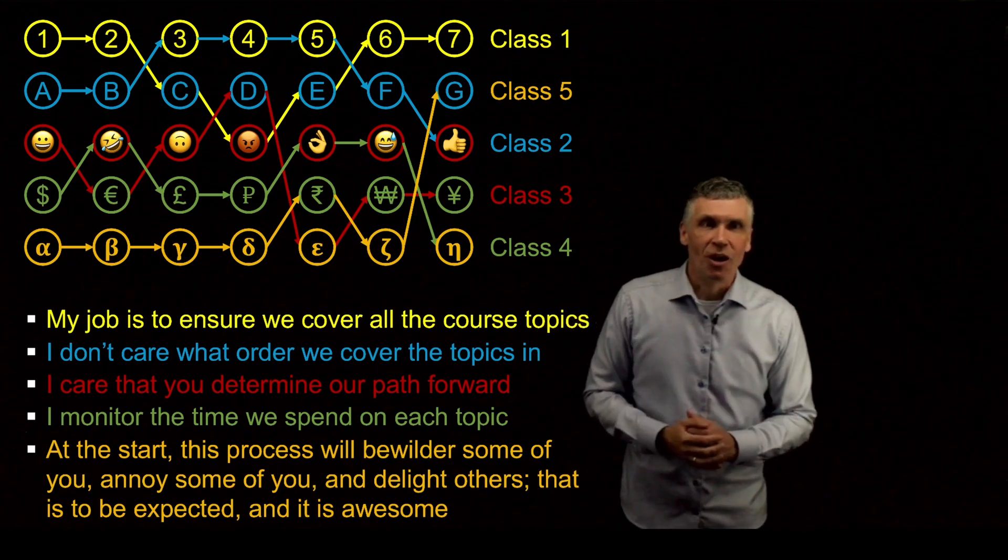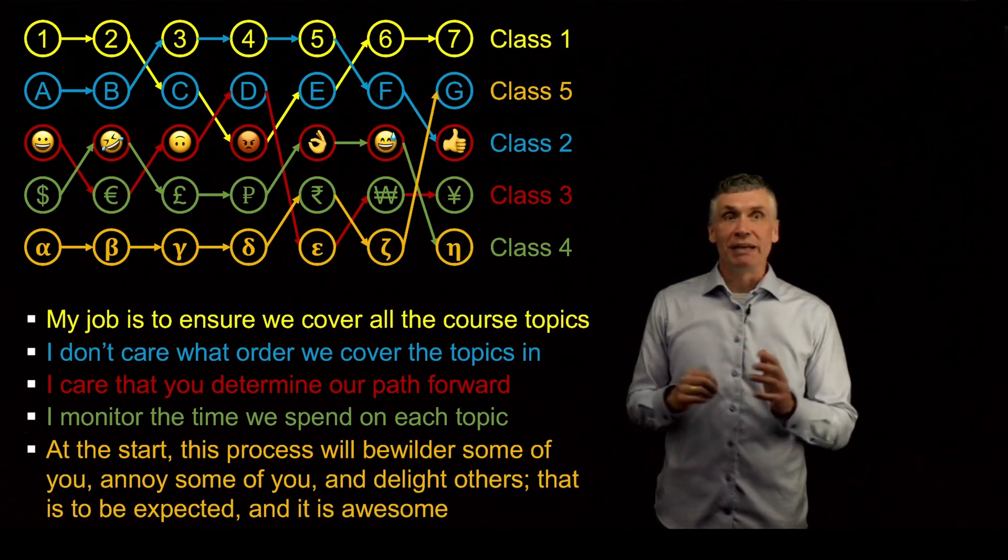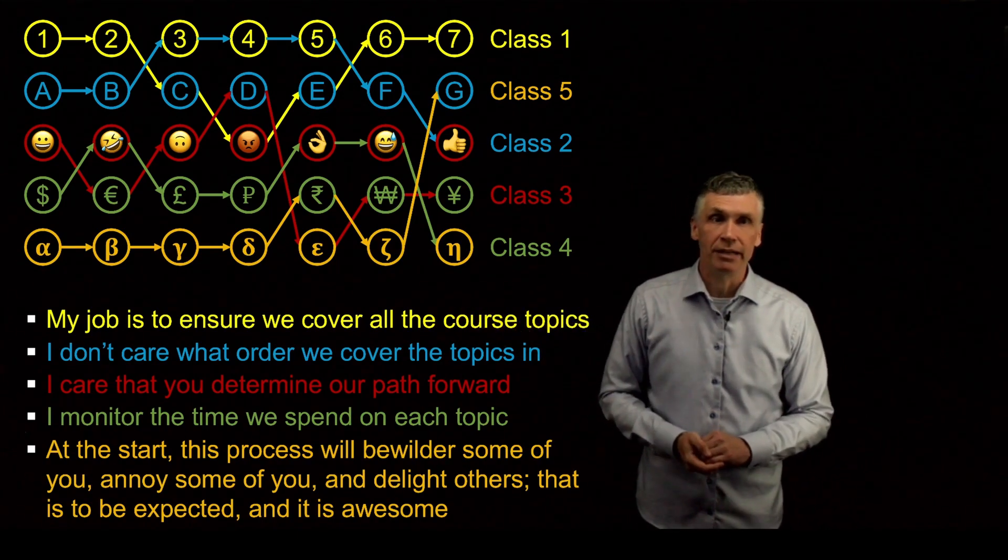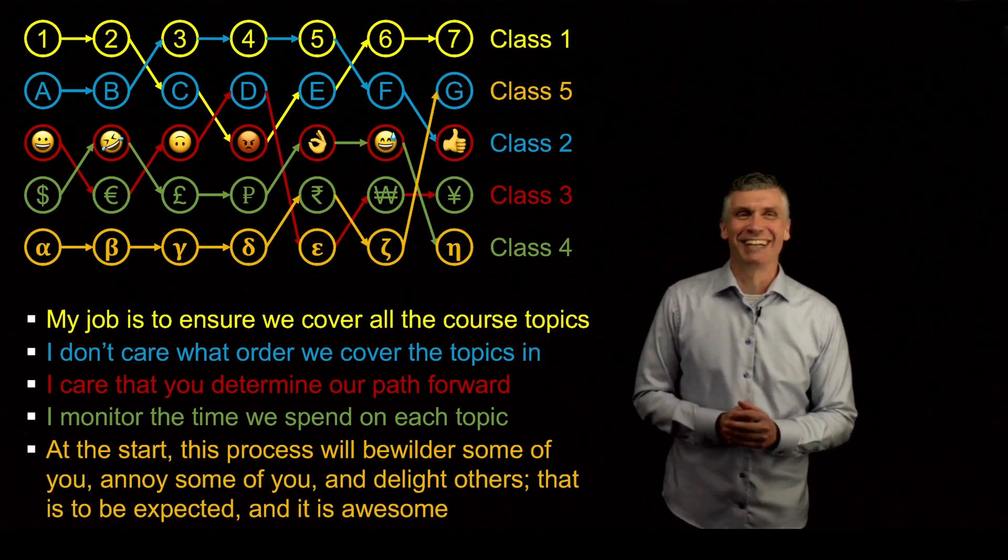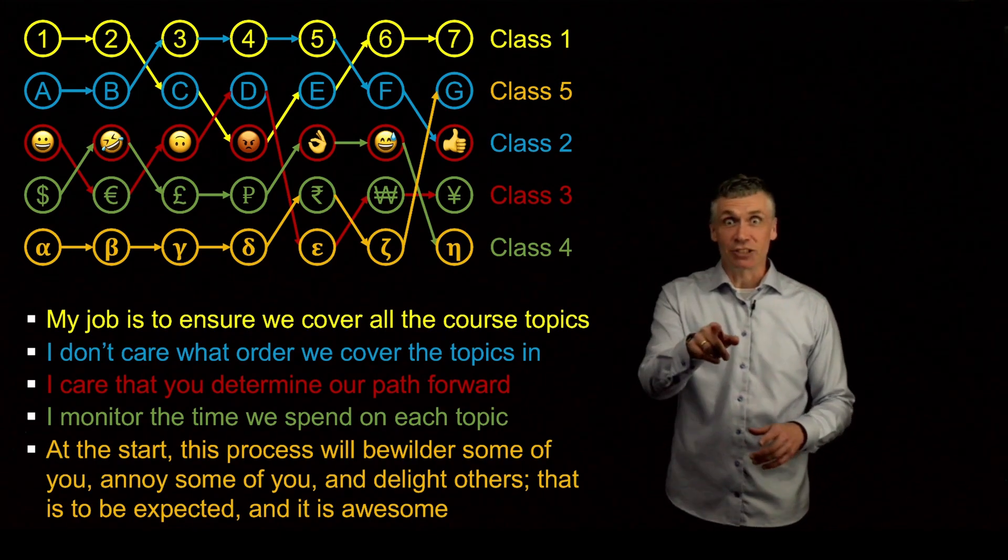What I care about is that we as a group determine the path forward, that we're invested enough that we determine where we're going each class session. I monitor the time that we spend on each topic. I want to make sure that we don't just get bogged down in beta and never get out of beta. In 22 class sessions, is there going to be some session where we don't get out of beta? Yeah, I believe that. But there won't be multiple sessions where we don't get out of beta.